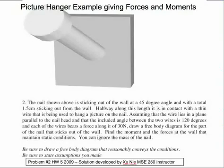So the nail shown above is sticking out of the wall at a 45 degree angle, with about a total of one and a half centimeters sticking out from the wall. Halfway along its length, it is in contact with a thin wire that's being used to hang a picture on the nail. Assuming that the wire lies in a plane parallel to the nail head, and the included angle between two wires is 120 degrees, and each of the wires bears a force along it of 30 newtons.